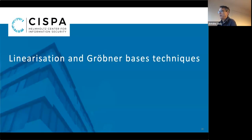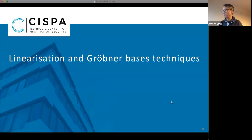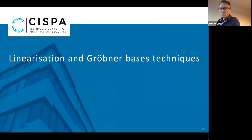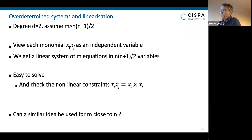Now I want to go into something which is a little bit more classical, which has been around for ages, at least for the Gröbner basis technique. What is called linearization appeared in the crypto literature around 2000, a little bit before I guess. So what I'm going to do first is show you a very simple example.